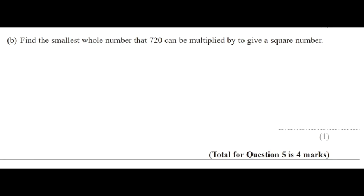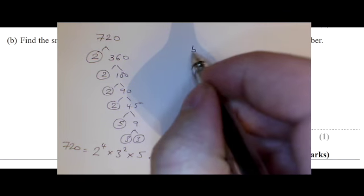OK, now for the second part, it's saying what can we multiply 720 by to create a square number?